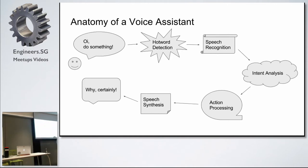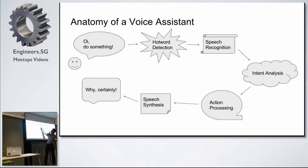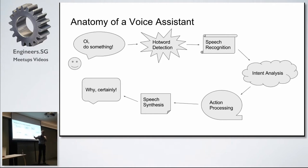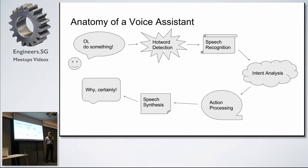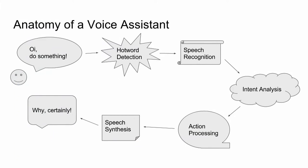I have a nice graph here. First, you ask it to do something — it needs to detect that someone wants to talk to it. In the case of Alexa, it listens for the word 'Alexa'; for Hey Office, it listens for 'Hey Office.' Once the hot word is detected, speech recognition understands what you said. Then intent analysis figures out what you actually want to do. Then action processing does it, and finally speech synthesis lets you know the result.